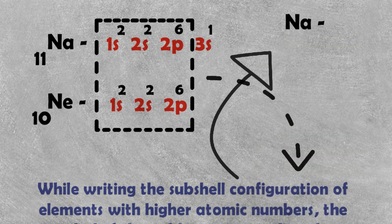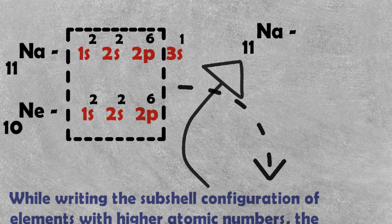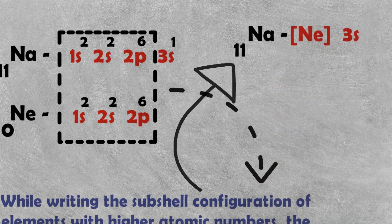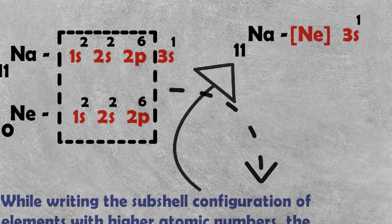We will shorten it to the electronic configuration — this is the shorthand electronic configuration. Now let's see how we will call the two VIPs: Copper and Chromium.